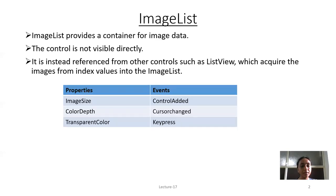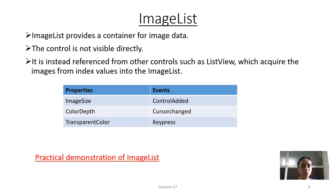These are the properties and events of the Image List control. Properties include Image Size, Color Depth, and Transparent Color. Events include Control Added, Cursor Changed, and Key Pressed. Now we will see the practical demonstration of the Image List control.